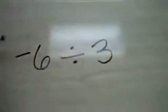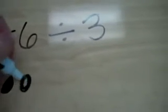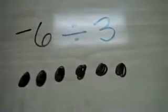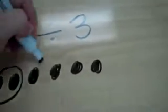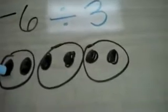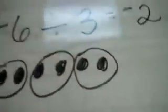What if I had negative 6 divided by 3? My first number tells me how many tiles I'm starting with and what kind they are. My second number tells me how many equal groups I'm going to make — I'm going to make 3 equal groups. My quotient, my answer, is what is in one of the groups. In one of the groups is a negative 2.